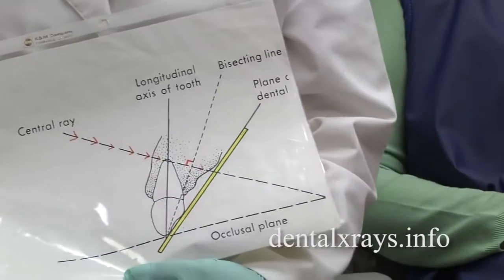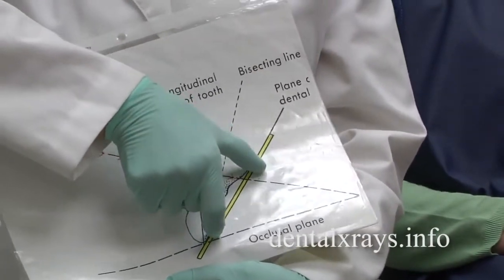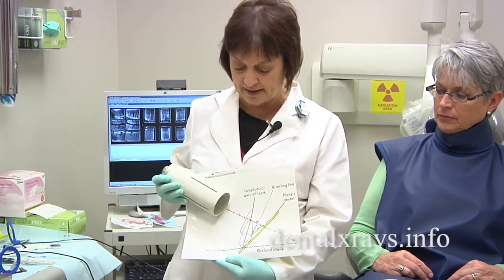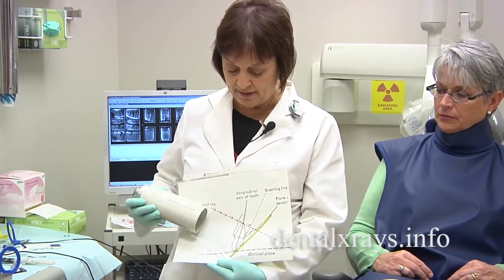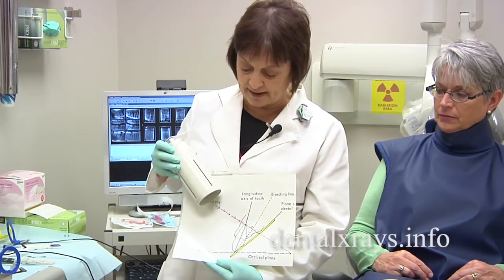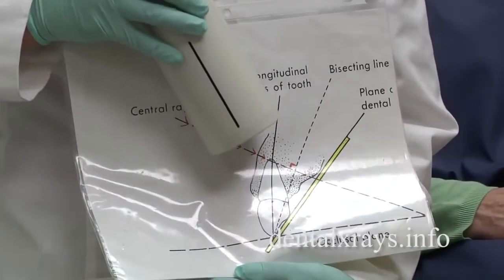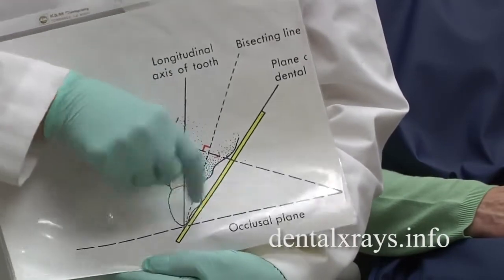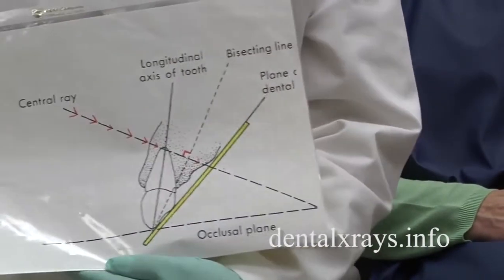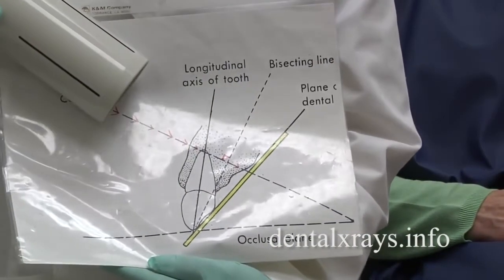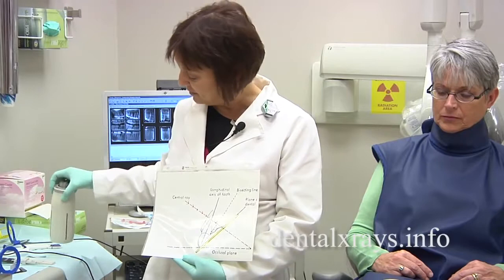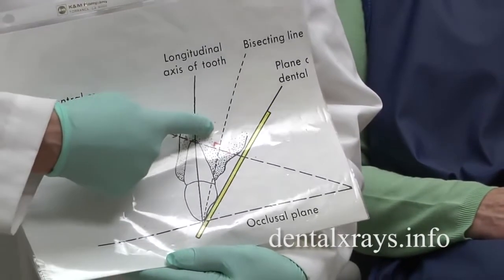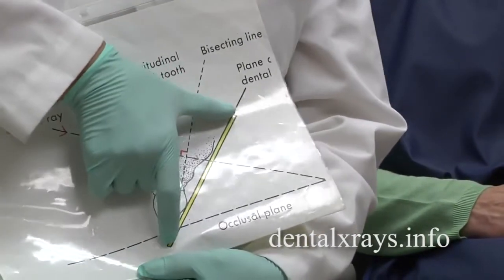By doing so, that causes the image of the tooth to be exactly the right size on your film. It's when you don't have the correct angle — you're too high or too low — that your image is going to be too short. If it was projected down too steeply, the root tip gets projected down and that causes a very short image. If you don't have enough angle and you come in too flat, the x-rays travel in a straight line, the root tip is projected way up on your film, and that gives you an elongated image.